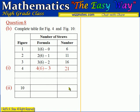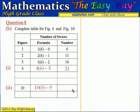For figure 10, continuing the same pattern, we have 10 in front, multiplied by 6 in the bracket, minus 9, which is one less than 10. So 10 × 6 equals 60, and 60 minus 9 is 51. The number of straws for figure 10 is 51, and we have now completed the table.